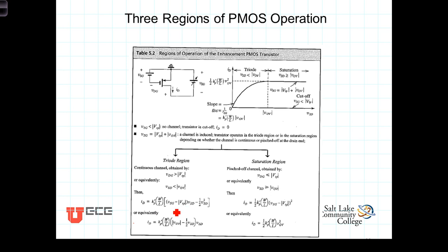Similarly, as we described, because of the changes in polarity, we have the overdrive voltage being then VSG minus the magnitude of the threshold voltage. Again, because in the PMOS transistor, the threshold voltage is a negative value.